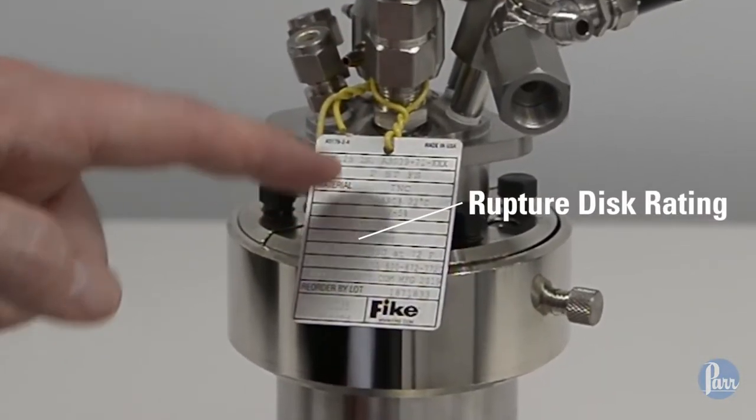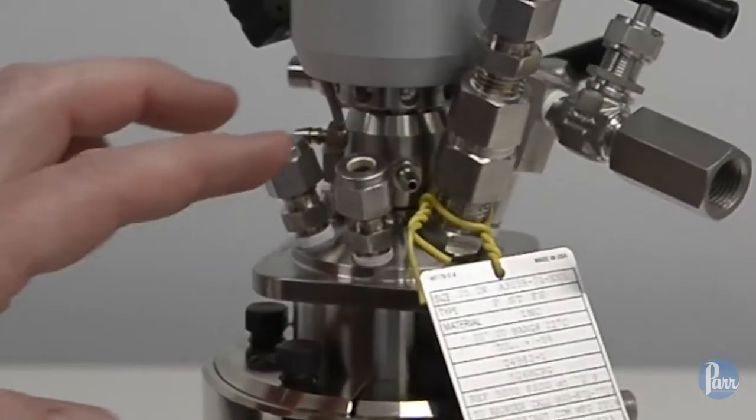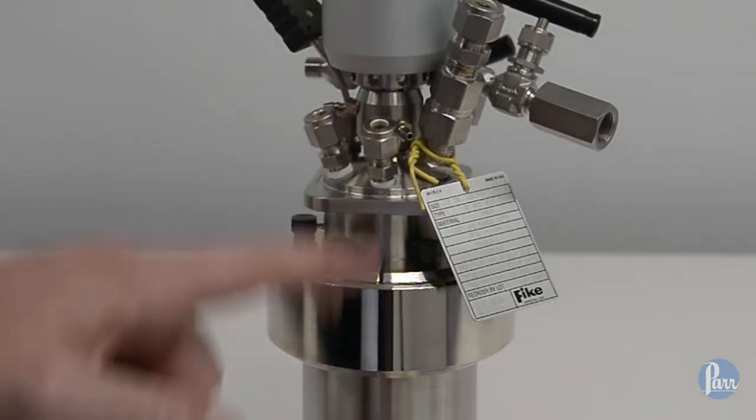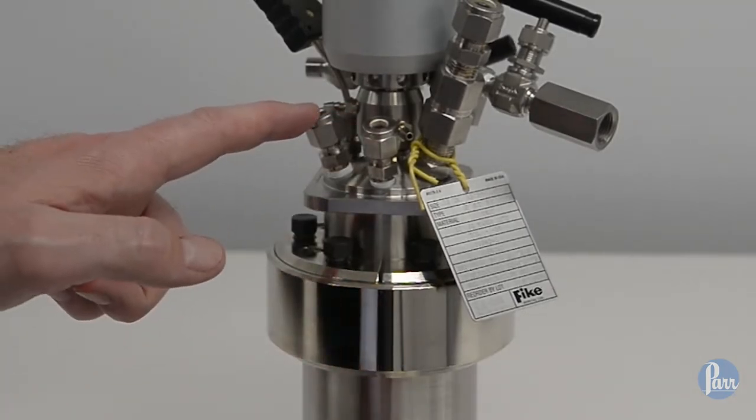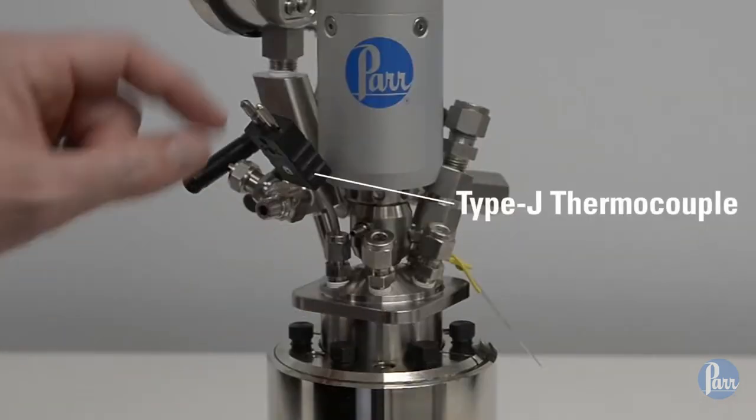The next two ports are for cooling water inlet and outlet, connected to the cooling loop inside the vessel. Finally, the thermocouple is shown here, a Type J in a vertical port.